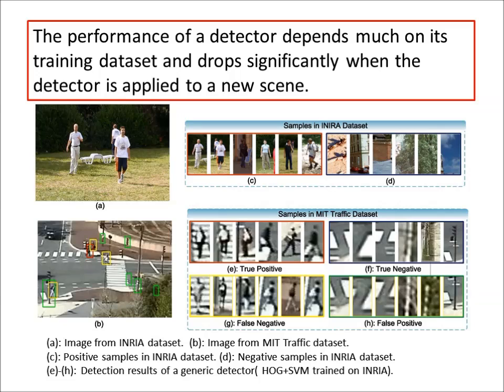The performance of a detector depends much on its training data and drops significantly when huge variances exist between the source training data and the target scene.